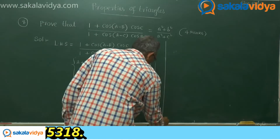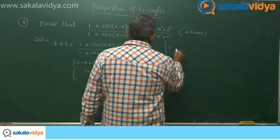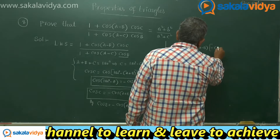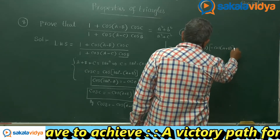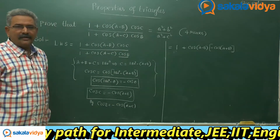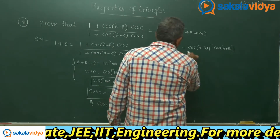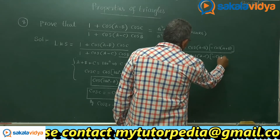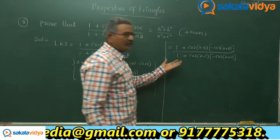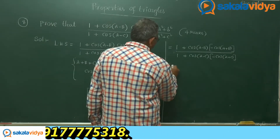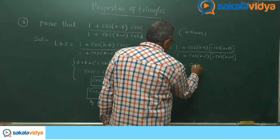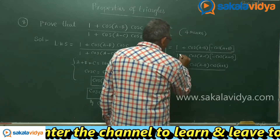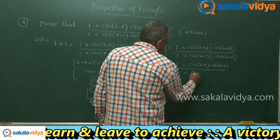Now the left hand side can be written as 1 plus cos of (a minus b) multiplied by minus cos of (a plus b), upon 1 plus minus cos of (a minus c) multiplied by minus cos of (a plus c). Cos c is replaced by minus cos of (a plus b).